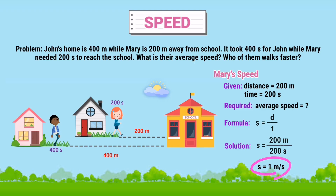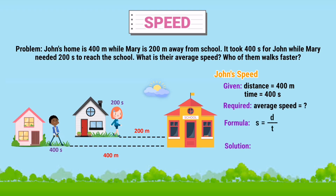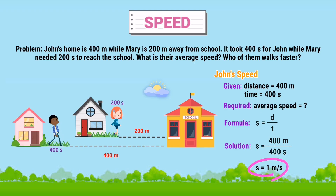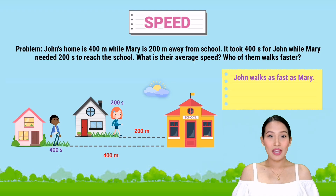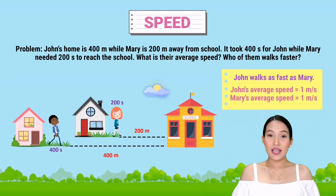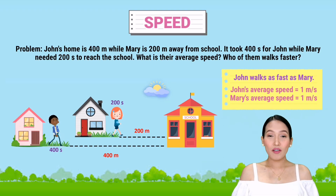Let's solve for John's speed this time. Distance is 400 meters and time is 400 seconds. Repeating the same process, that's 400 meters divided by 400 seconds. The answer is 1 meter per second. Therefore, John walks as fast as Mary because both have the same speed of 1 meter per second, which means both John and Mary can cover a distance of 1 meter in just a second.